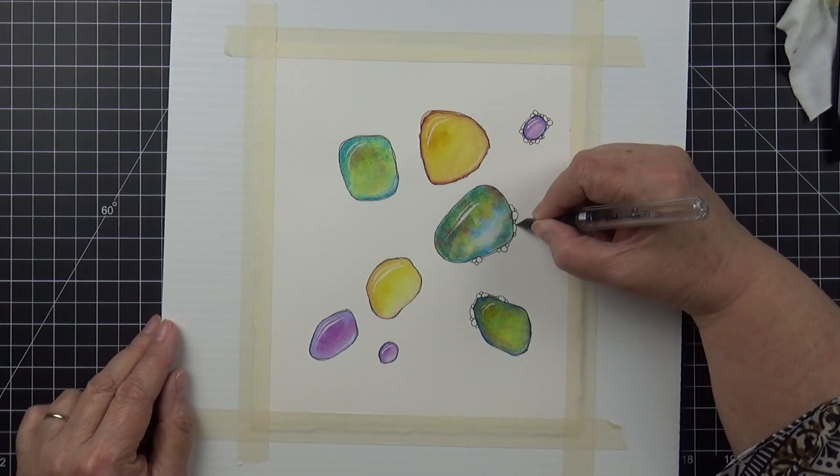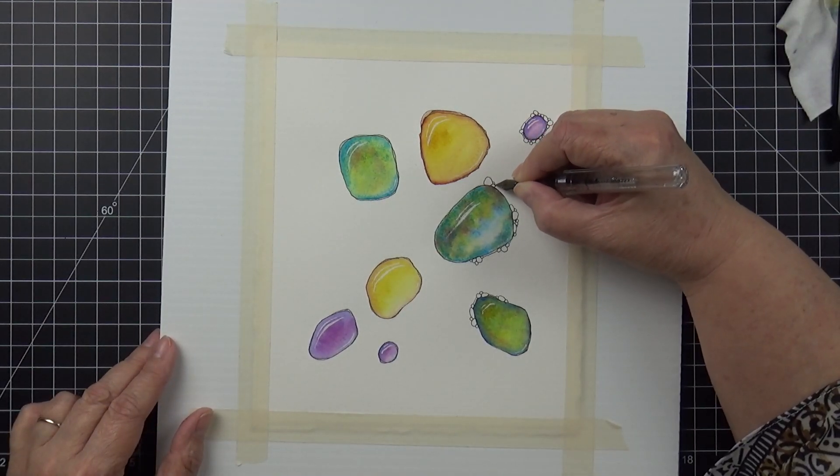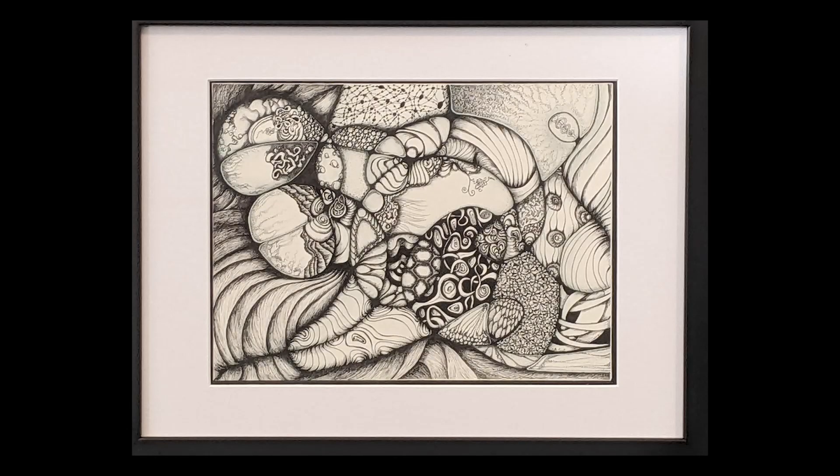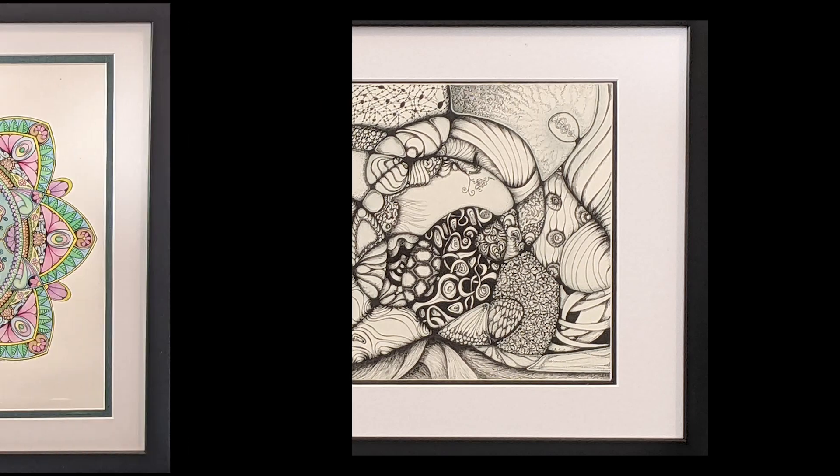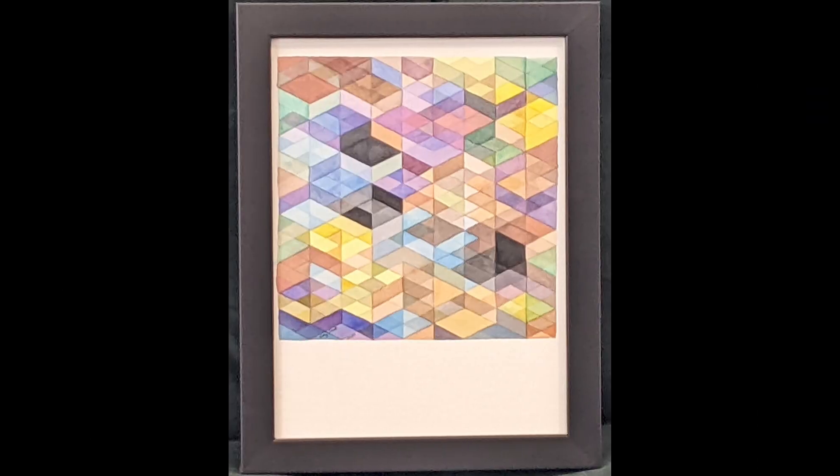So I took the three pieces that I felt were the most valuable. One of which I took was the first neurographic piece that I did on YouTube, and then a really large mandala that I did, and a watercolor color study that I did. So I took those up to Michael's to have them framed.